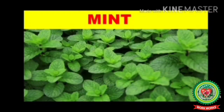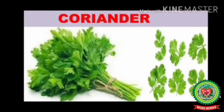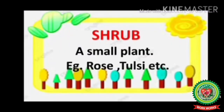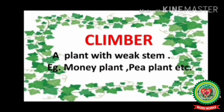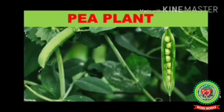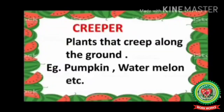Mint is a herb which is used to flavor our food. Coriander — see, coriander leaves are quite soft and weak, we can break them easily. Coriander is also used to flavor our food. Shrub: a small plant. Examples are rose and tulsi. Climber: a plant with weak stem. Examples are money plant and pea plant.